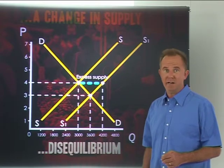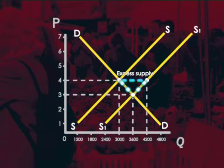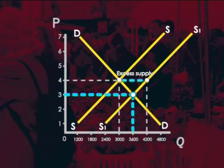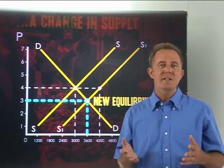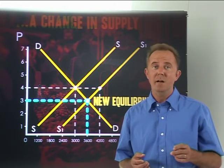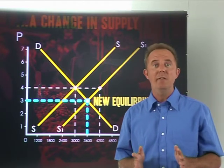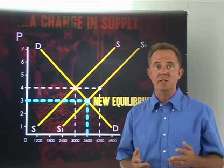Suppliers will now have to compete to get rid of the product, and lowering the selling price is the most obvious way of doing this. As the price falls, quantity demanded grows and suppliers start to produce less. This process continues until equilibrium is reached again at a price of 3 Rand, where quantity demanded equals quantity supplied at 3,600 pieces. An increase in supply leads to a decrease in price and an increase in equilibrium quantity.